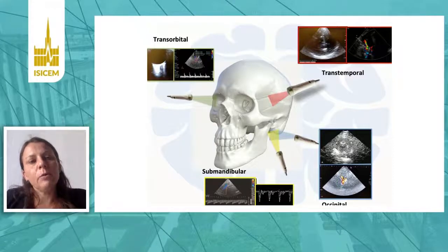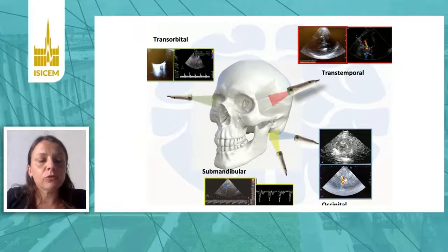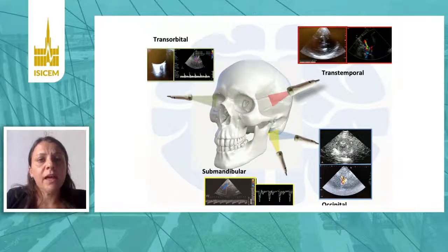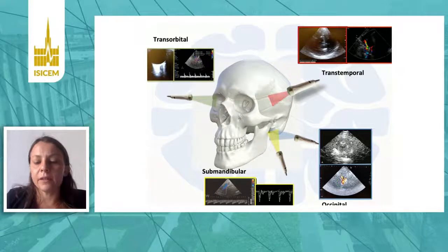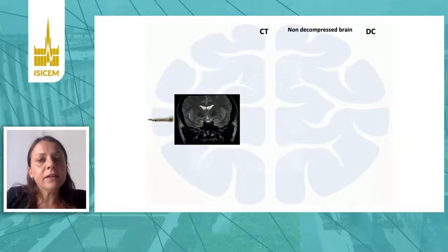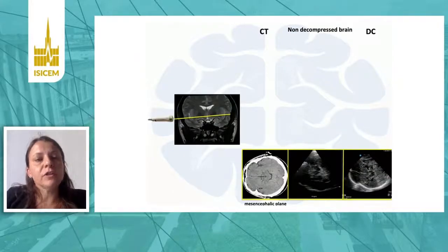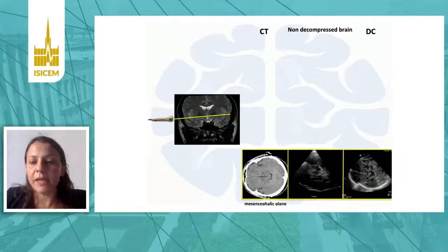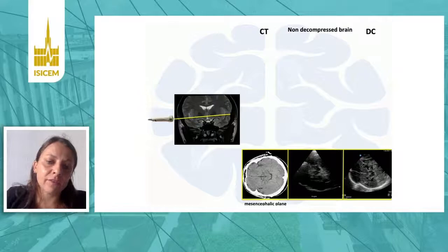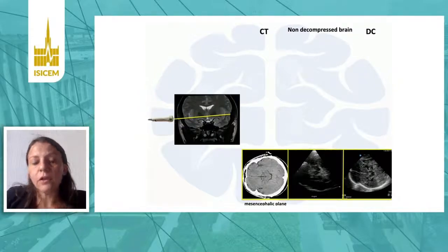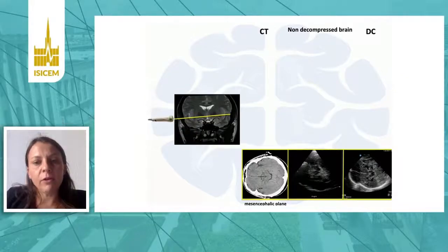Here you can see the different windows through which to assess the different vascular and parenchymal anatomy — through the transtemporal, transorbital, submandibular, and suboccipital windows. You can see an example of this visualization using different planes, for example at the level of the mesencephalic plane, where you can assess the Circle of Willis — the main vessels of the brain — as well as the parenchyma and the mesencephalus.